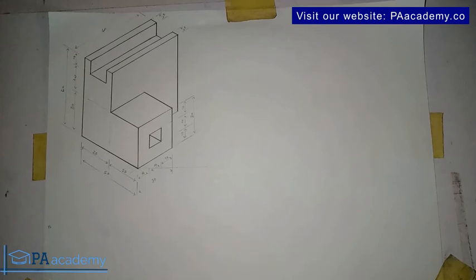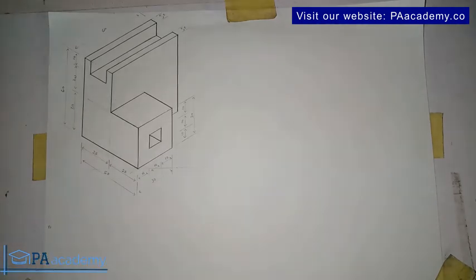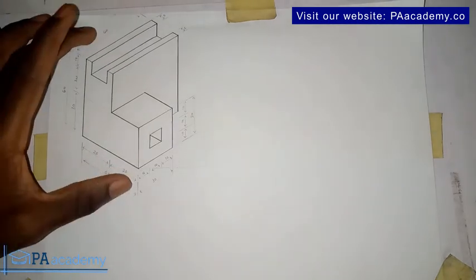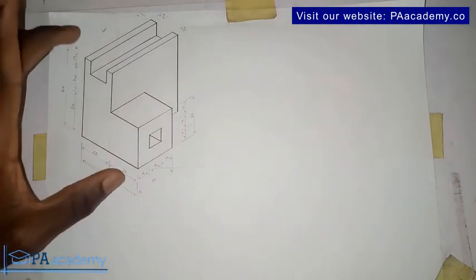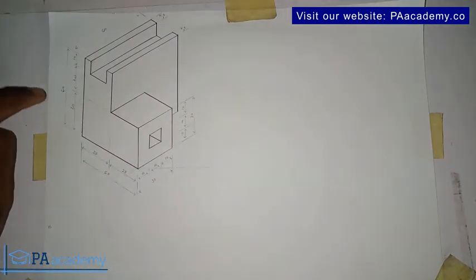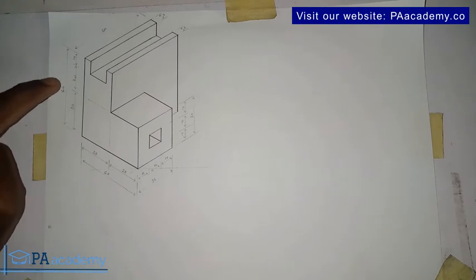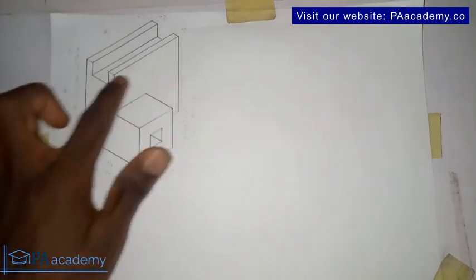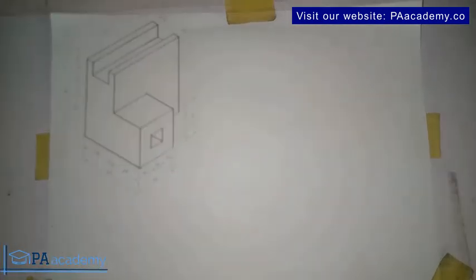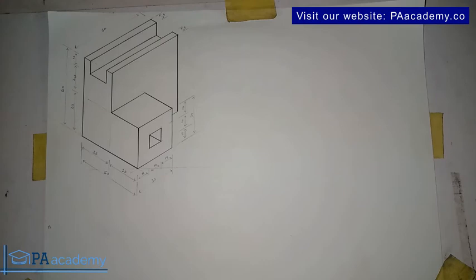Hello and welcome back to PA Academy. So far in this video we have been looking at isometric drawing, and right here we're on drawing 15, so we've looked at 14 drawings so far. Now this is what we are going to be replicating — this isometric drawing. If you look at it, the top is similar to what we looked at in drawing 14.